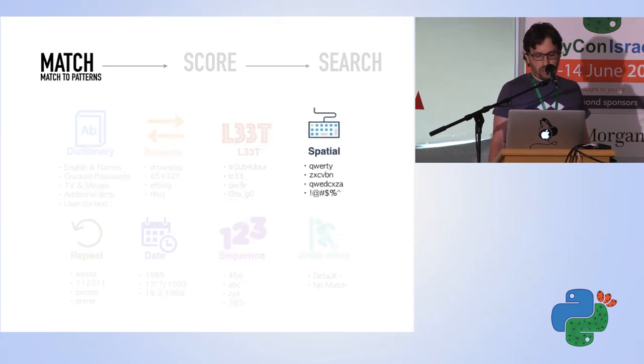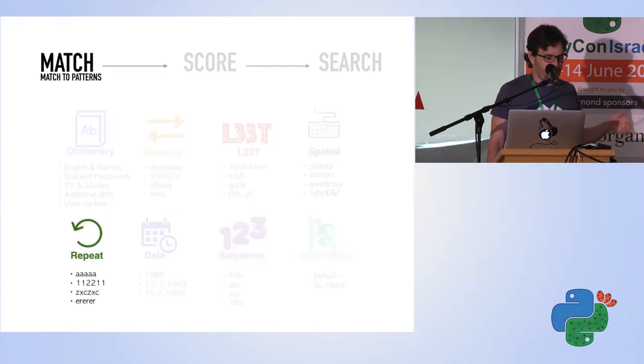We have this spatial matcher, which is like qwerty and zxcvbn. Now you know where the name comes from—it's keystrokes that are next to each other. Also some more complicated ones, as you can see here.